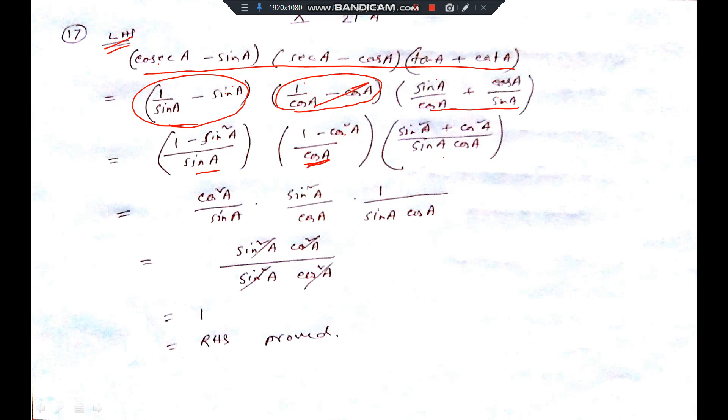And here, cos sin A LCM. So, sin A into sin A, that is sin square A. And cos A into cos A, that is cos square A. So, sin square A plus cos square A, that is 1.